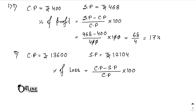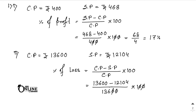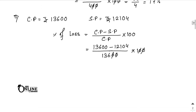So we write: 1360 minus 1210.4, divided by 1360, into 100. The zeros cancel out. 1360 minus 1210.4 equals 149.6, divided by 136, equals 11%. That is your answer.